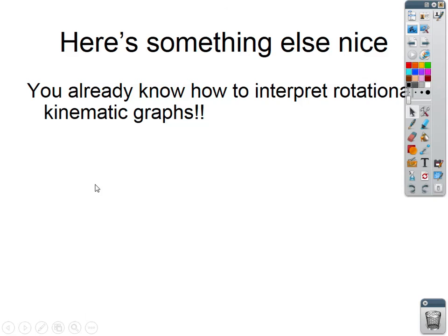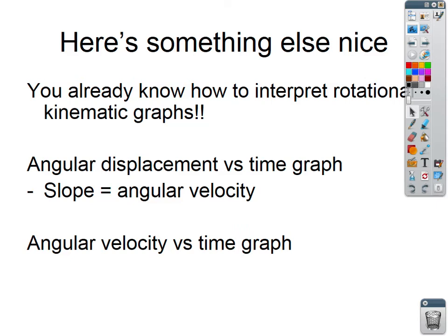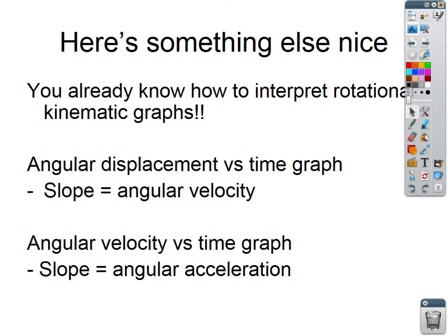Since we have all these kinematic values, we're going to have rotational kinematic graphs — and you already know all of this. On an angular displacement versus time graph, the slope is angular velocity. On an angular velocity versus time graph, the slope is angular acceleration. The area underneath an angular velocity-time graph gives you the change in angular displacement.